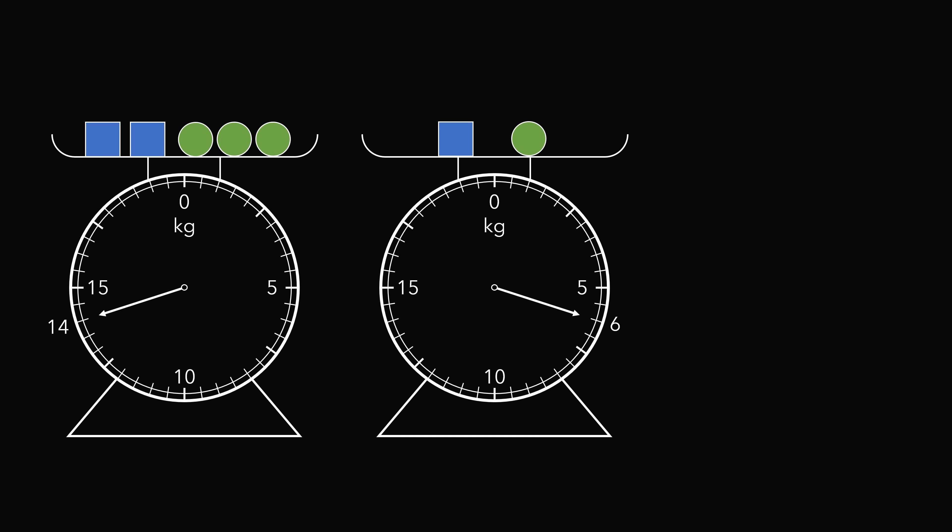Take a look at the scale on the right. It has one square and one circle. Imagine adding one more square and one more circle. This would double the weight that's on the scale.